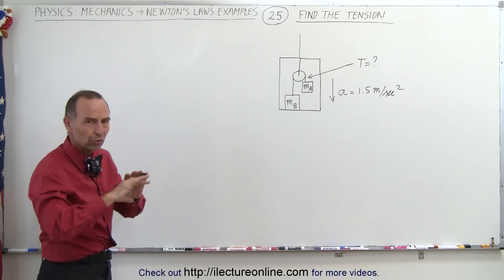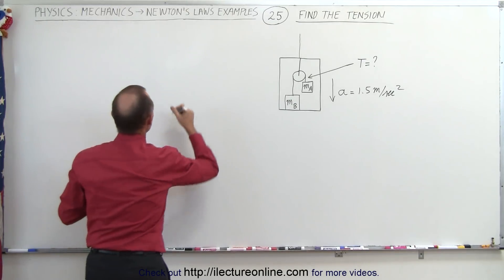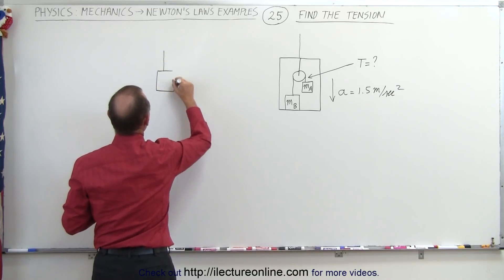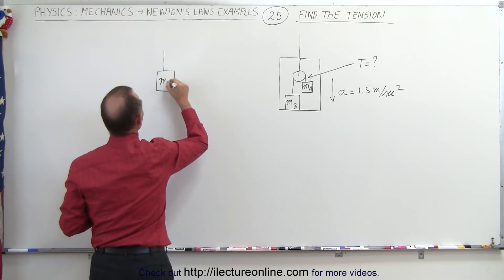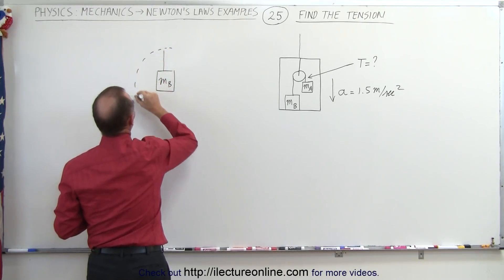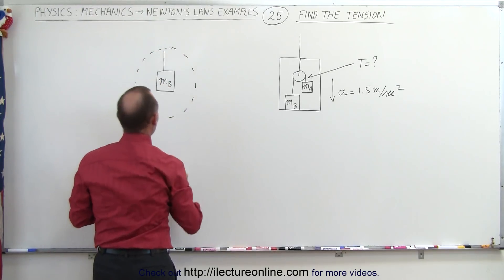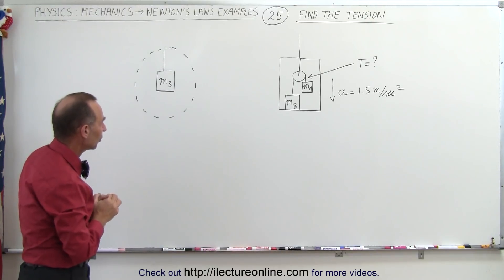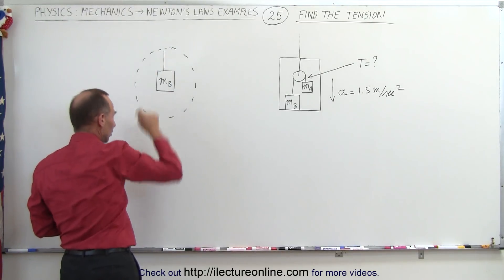So what we should do is draw a free body diagram. We'll do that for the mass m_b, and so here's what we would call our free body diagram. Now let's look at all the forces acting just on that one mass alone since we're trying to find the tension in this string.